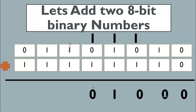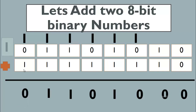Again we get three, so one sum and one carry. One sum and one carry again. Now one plus one is two, so zero sum and one carry. We are working with eight-bit binary numbers, so the ninth bit will be discarded — this is the concept of overflow, where our memory overflows.